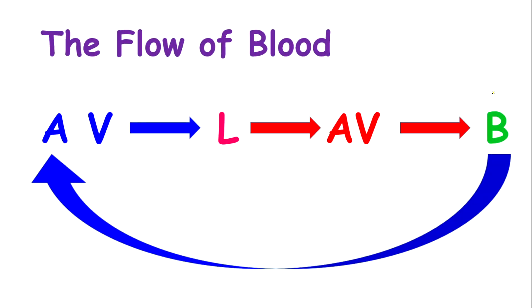Let's start from the body. Blood flows from the body into the right atrium, then into the right ventricle, then into the lungs. From the lungs, it goes back to the heart — the left atrium — then into the left ventricle, and back to the body. That is the entire circulation of blood made easy.